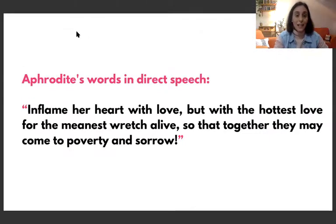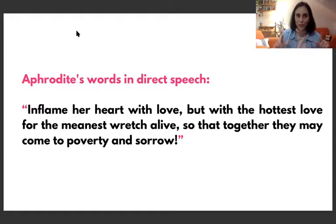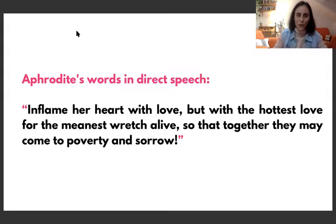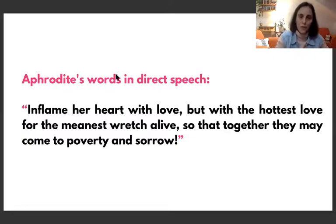Aphrodite's words in direct speech — every time you see quotation marks, it's direct speech: 'Inflame her heart with love, but with the hottest love for the meanest wretch alive, so that together they may come to poverty and sorrow.' So Aphrodite wanted CK to fall in love with the most unfortunate, wretched man alive, and she wanted this sad future for CK.